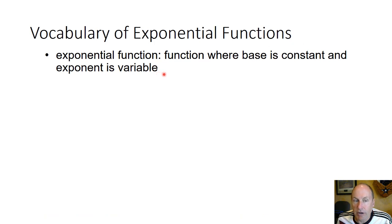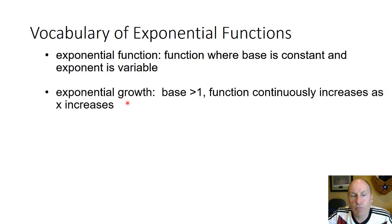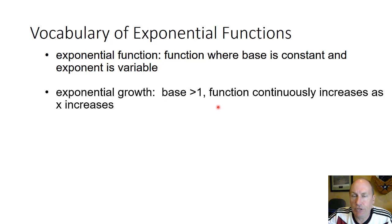Let's start off with some terms. An exponential function is a special kind of function where the base itself is constant, and what's variable is actually the exponent. We have two basic kinds of exponential functions. Exponential growth is where the base is greater than 1, and this is a function that, as x is increasing, continuously increases. The rate of increase depends on the magnitude of the base.